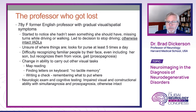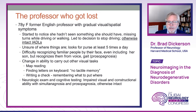She had difficulty reading maps, finding letters on the keyboard, felt she had no sense of where her fingers were in space, and had trouble writing a check. On neurologic exam and cognitive testing, she had impaired visual and constructional ability with simultanagnosia and prosopagnosia supporting her symptoms. Otherwise her cognitive function was intact.